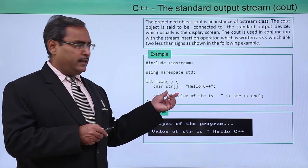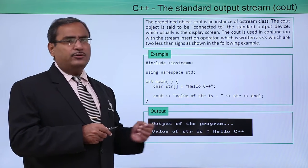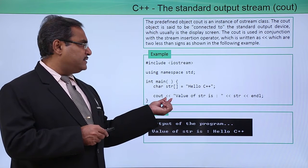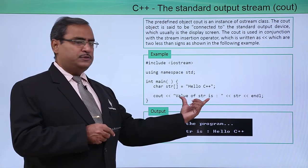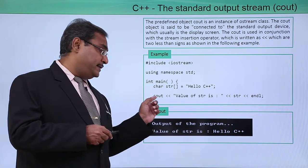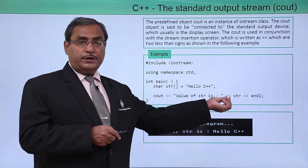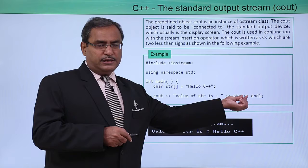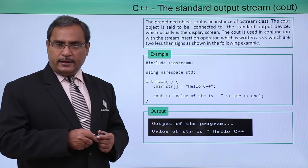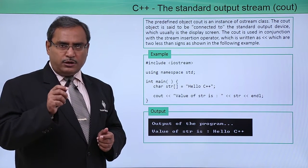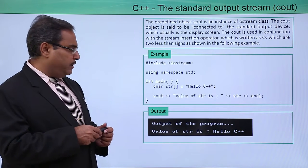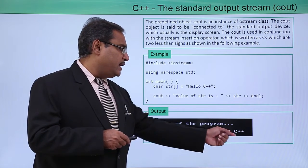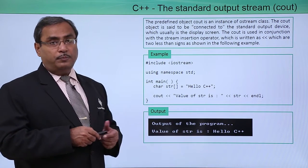Here we have defined one character array initialized with 'Hello C++'. We are printing it using Cout with the insertion operator followed by the string. In the same Cout statement we use the insertion operator multiple times — for the string variable str and then endl, which puts a newline at the end. Executing this code outputs: 'Value of str is Hello C++'.